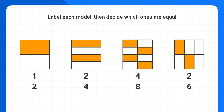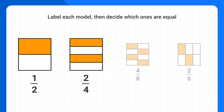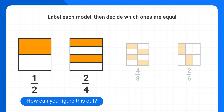If you've already been learning about equivalent fractions, you might be able to look at these different fractions and recognize which ones are equal. For example, you should start memorizing that one-half and two-fourths are equivalent. But if you aren't sure, how could you figure this out?